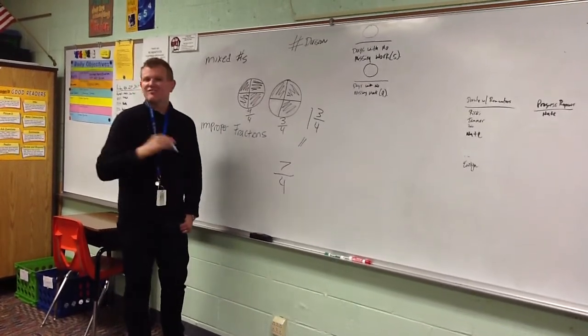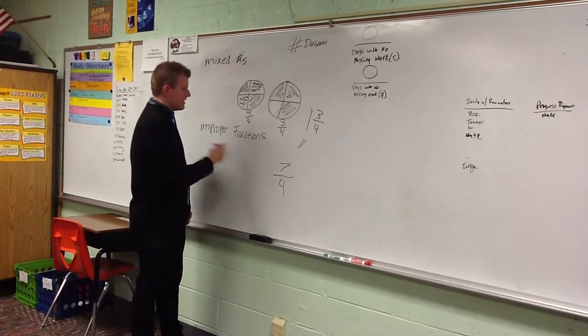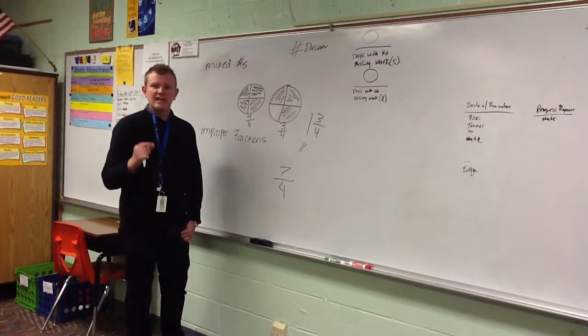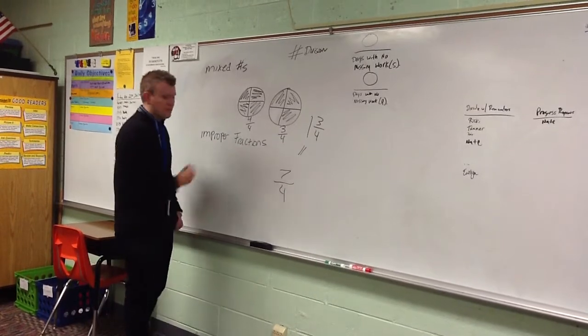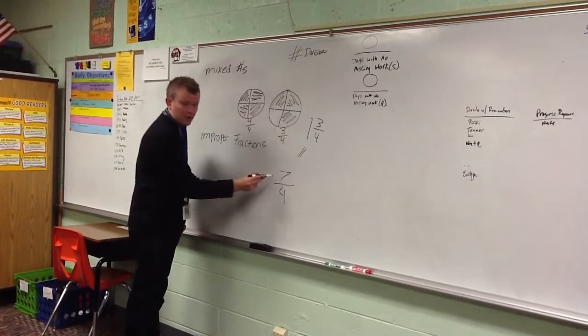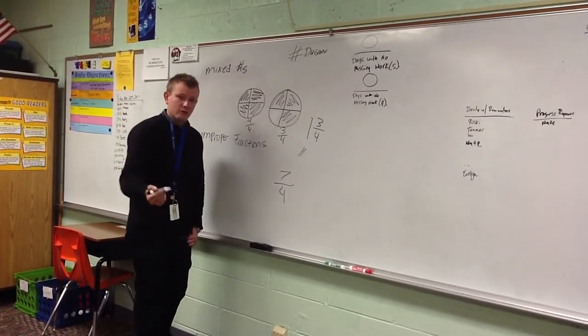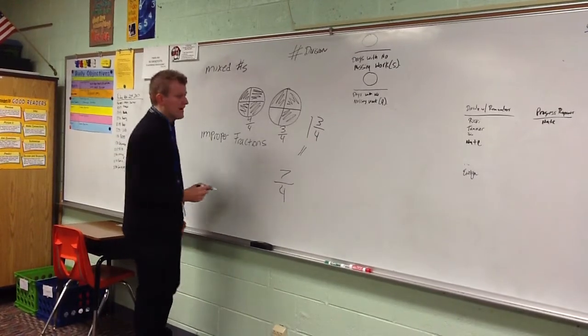It's improper because I've taught you and I've talked about that fractions, the numerator has to be smaller than the denominator. It's not the case anymore. If it's an improper fraction, it means that the numerator, or the number on top, is bigger than the denominator, which is the number on bottom.